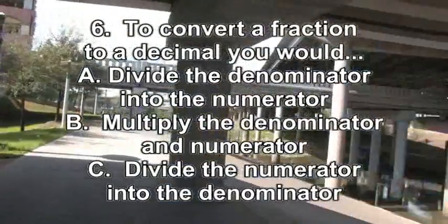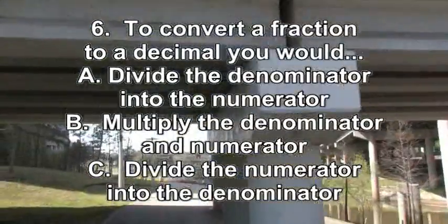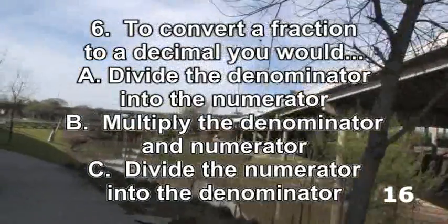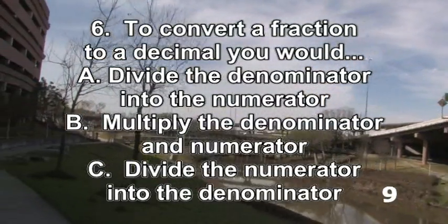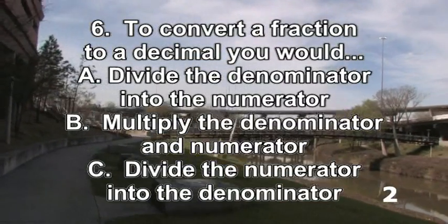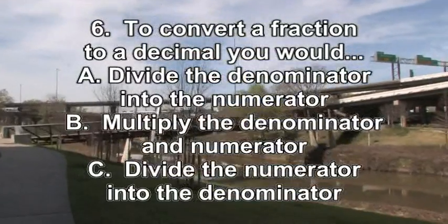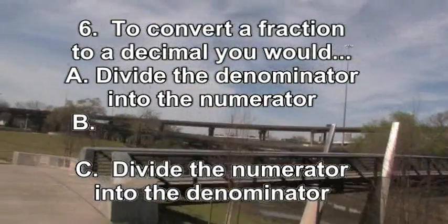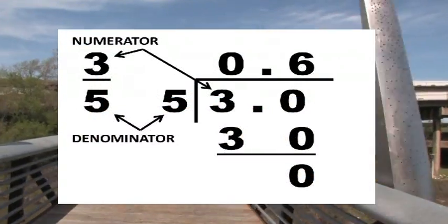Question 6. To convert a fraction to a decimal, would you A: divide the denominator into the numerator, B: multiply the denominator and numerator, or C: divide the numerator into the denominator? To convert a fraction to a decimal, you have to divide, which eliminates choice B. The correct answer is A — you divide the denominator into the numerator.